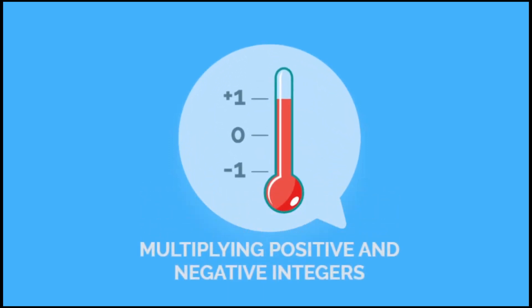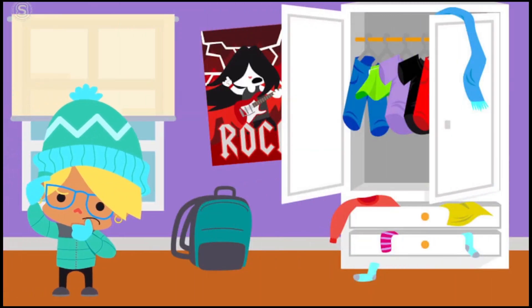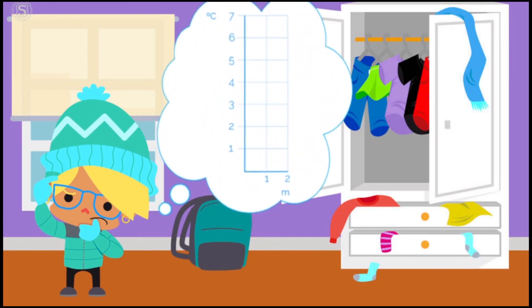Multiplying Positive and Negative Integers. Eva is going to Smartic Camp, and she's thinking about what clothes she needs to bring. It's in the mountains, and the instructors told her that the temperature is going to drop by 6 degrees Celsius for every mile that they climb.